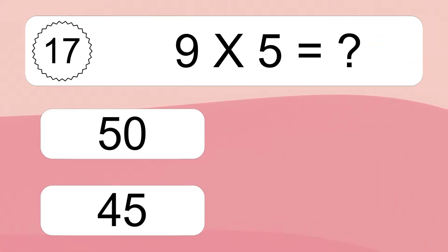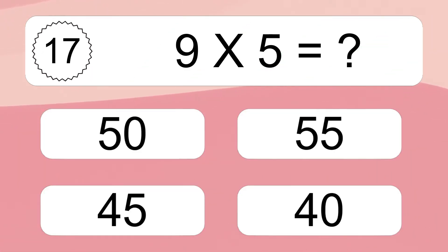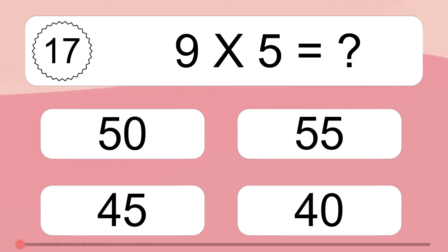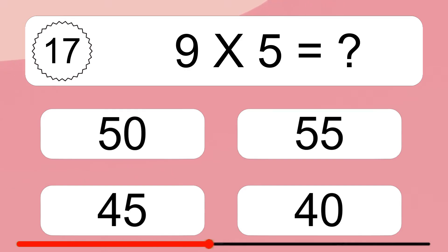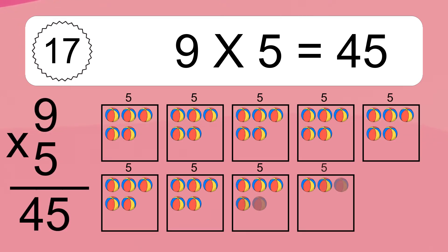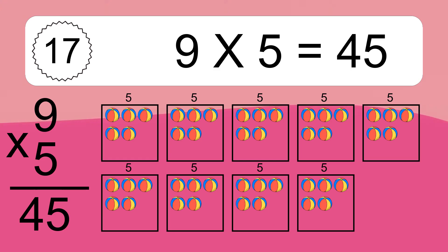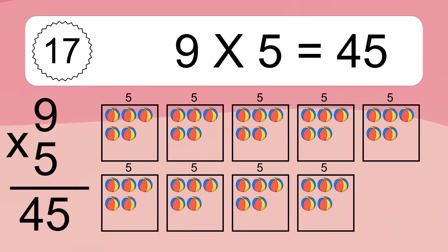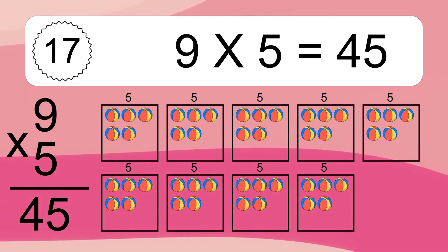9 times 5 equals what? 9 times 5 equals 45. We have 9 boxes and each box has 5 colorful balls inside. If you count all the balls in all the boxes together, you will have 9 times 5 balls. This equals 45 balls.